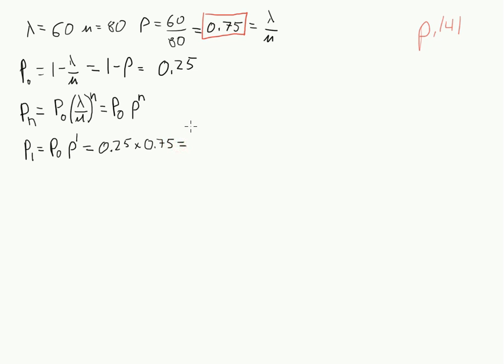So get out your calculator, 0.25 times 0.75 is 0.1875. So 25% of the time we have nobody here. How often do we have one person and only one person? Well, we have exactly one person here about 19% of the time.